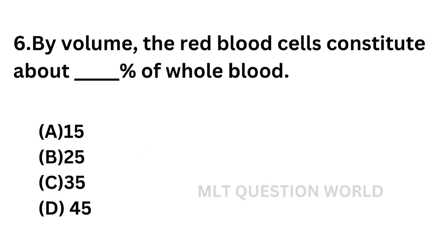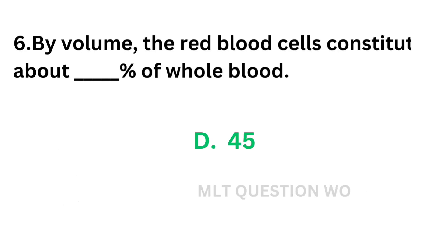Question number 6: By volume, the red blood cells constitute about dash percentage of the whole blood. Option A: 15%. Option B: 25%. Option C: 35%. Option D: 45%. Red blood cells constitute about 45% of the whole blood. The correct answer is option D: 45%.